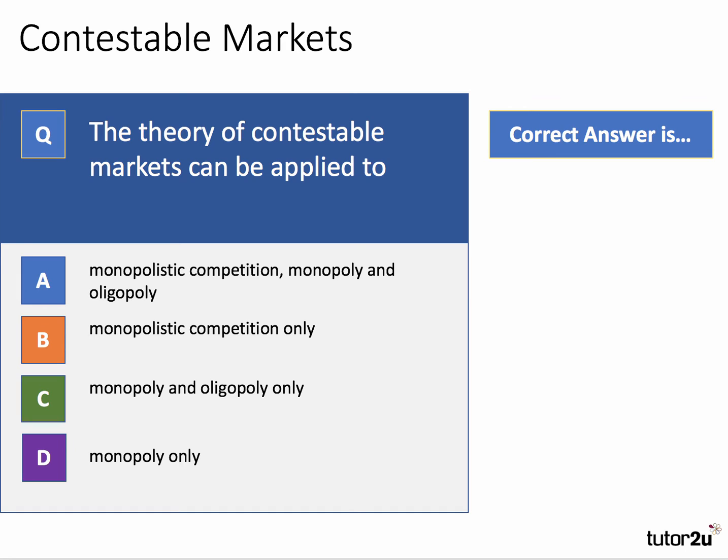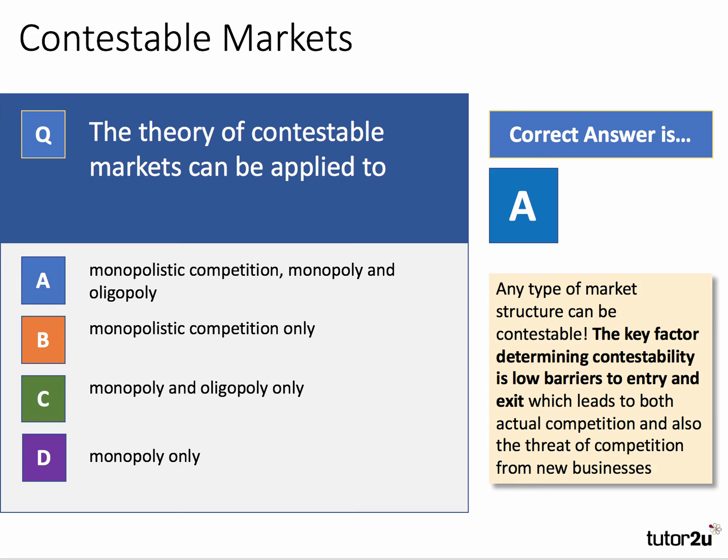The correct answer is A — it can be applied to all three: monopolistic competition, monopoly, and oligopoly. Any type of market structure can be contestable. The key factor that determines whether a market is contestable is the scale and height of the barriers to entry and exit. Providing the barriers to entry and exit are relatively low, you get a lot of actual competition, but crucially also the threat of competition — which can certainly apply in a monopoly and in an oligopoly.